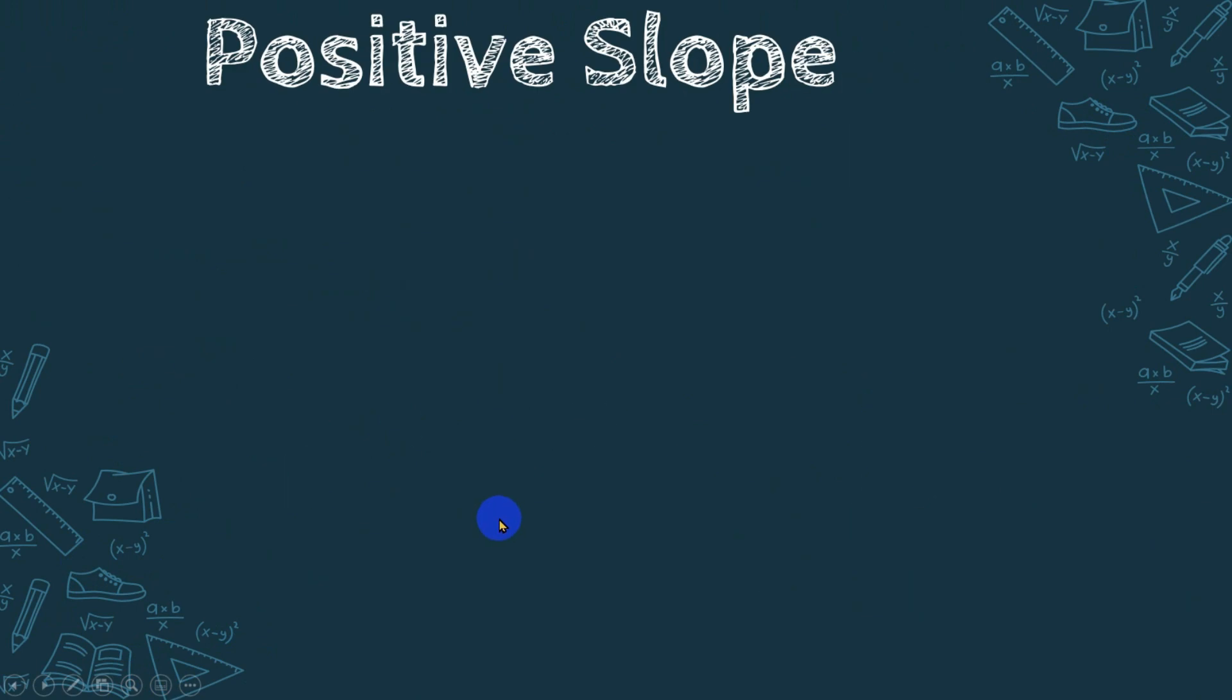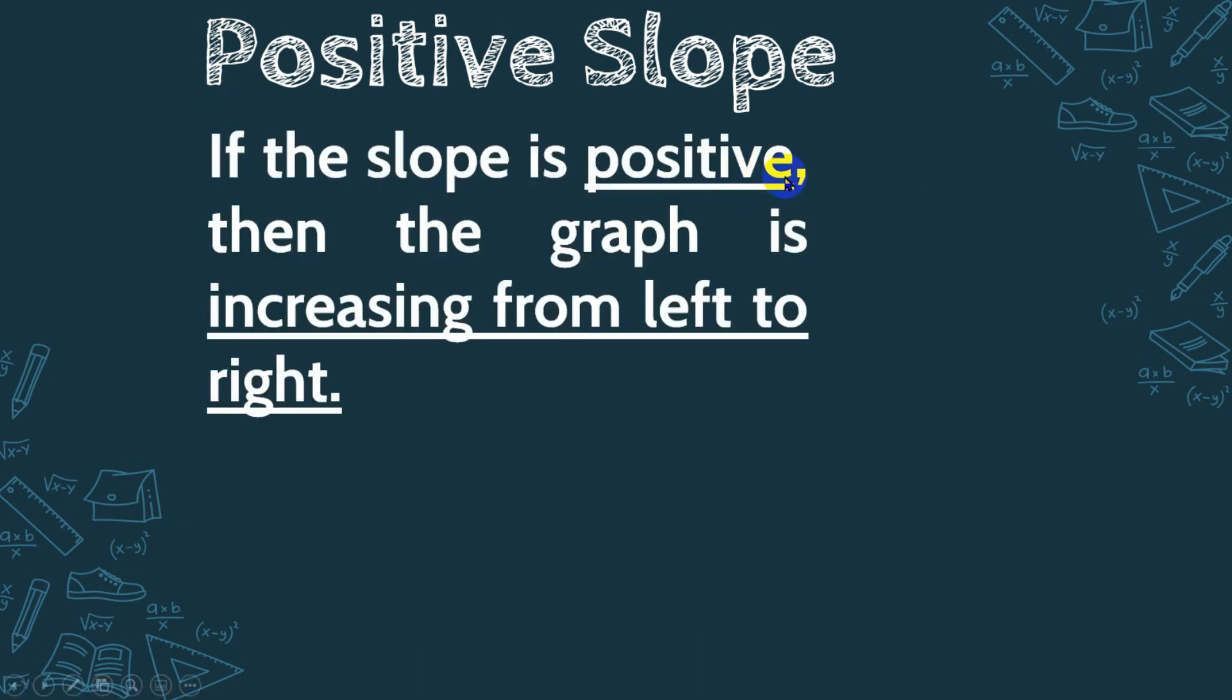The first type of slope is positive slope. If the slope is positive, then the graph is increasing from left to right or upward from left to right.